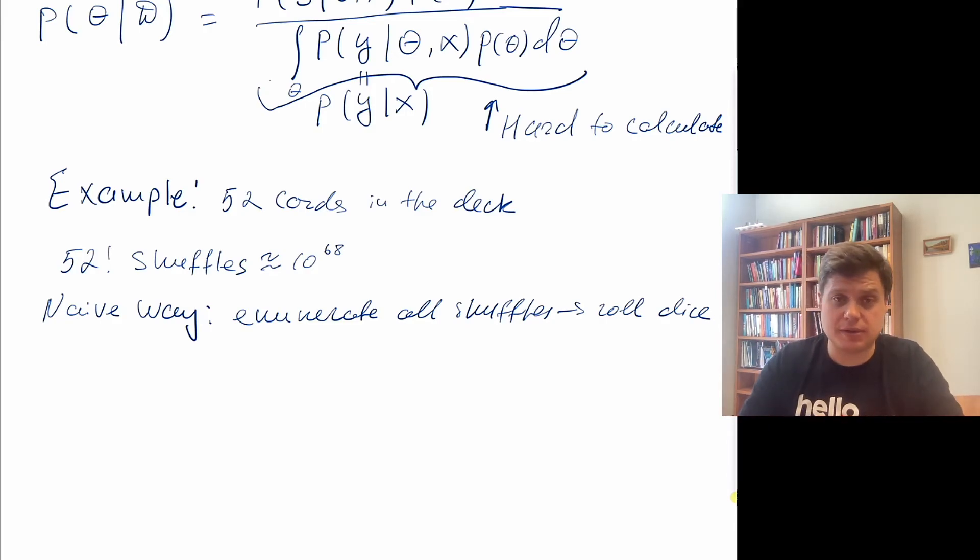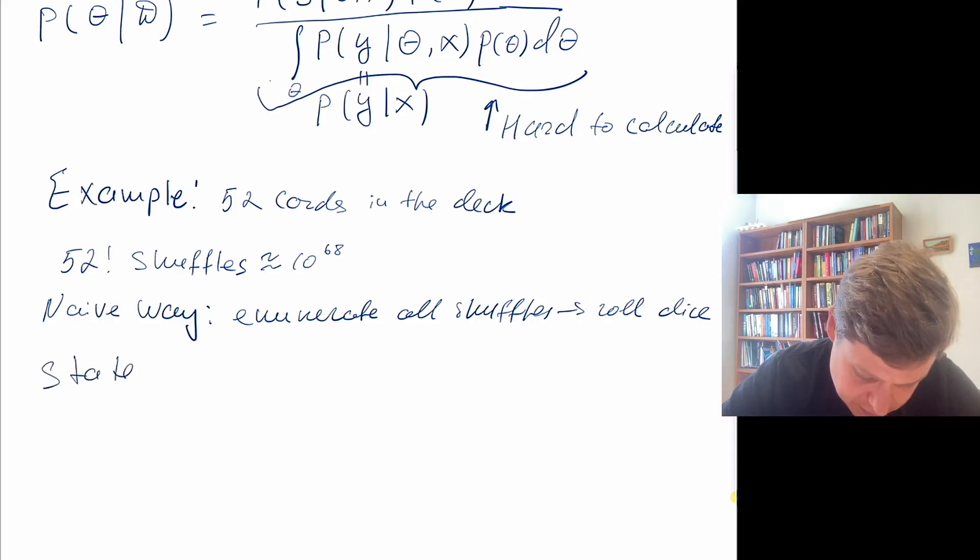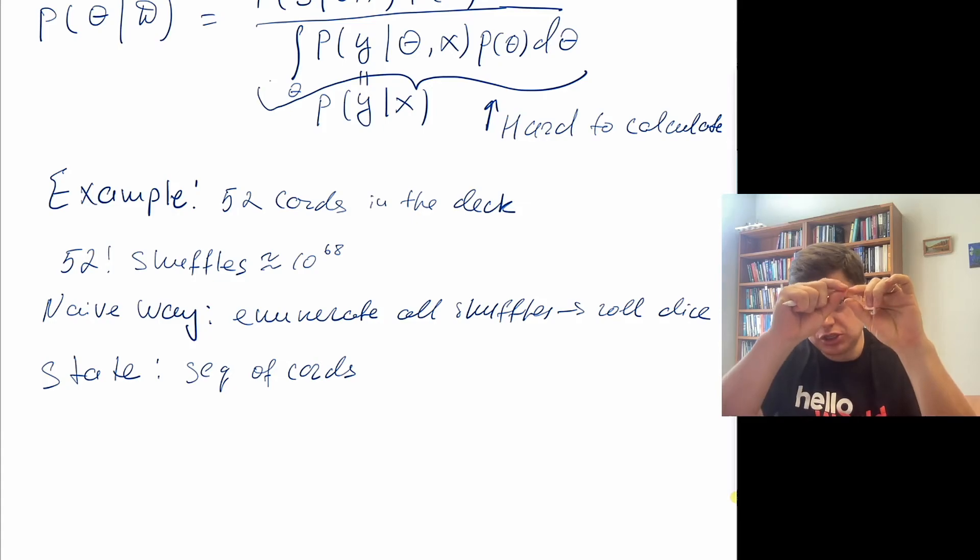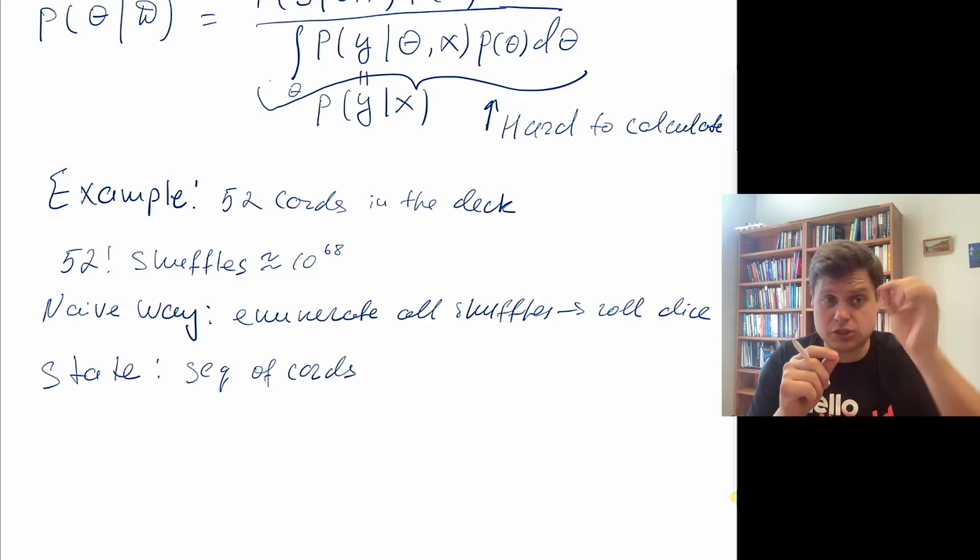And you just generated the random shuffle by doing very cheap operations. And each operation was a step in the Markov chain. So essentially your state is the sequence of cards in the deck. And what you do, you take the current sequence and you just change the top card. So this is a Markov chain and each time you do the same thing. So you slightly change your configuration of the deck. And you do this Markov chain multiple times. So at the end of this Markov chain, you have a random draw.